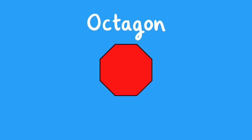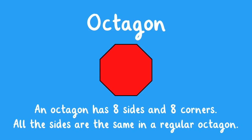Octagon. An octagon has eight sides and eight corners. All the sides are the same in a regular octagon.